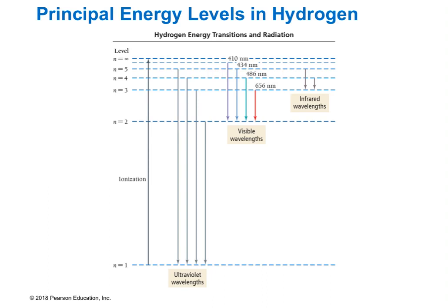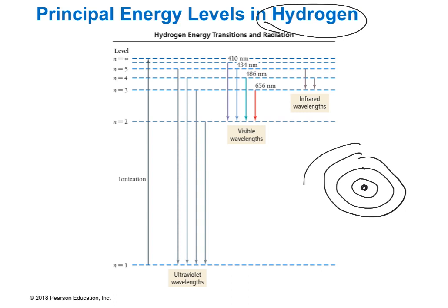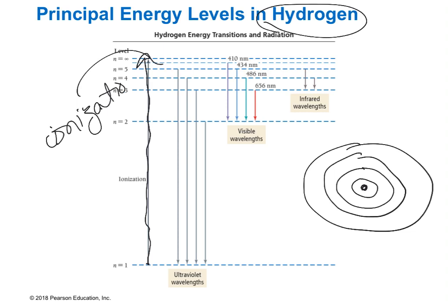Hydrogen has been studied in detail because it's the simplest atom. Electrons can transition from any energy level to any other. If an electron gains so much energy that it completely leaves the atom, that is called ionization energy — the electron is entirely removed and an ion is created. Otherwise, transitions between any levels are possible, and we know exactly what wavelength of light corresponds to each transition in hydrogen — though you don't need to memorize any of these.